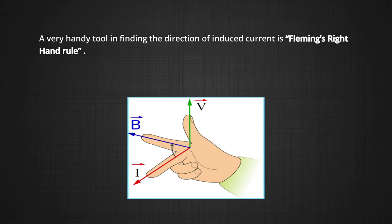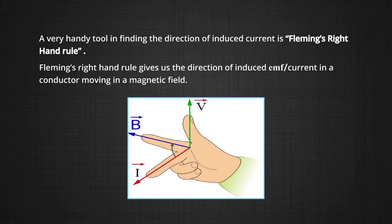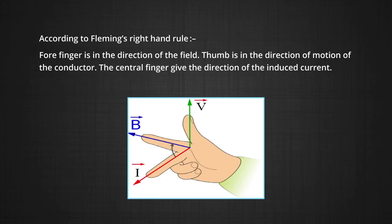This experiment shows how Lenz's law works, but we still need to know in which direction the current will be induced. A very handy tool for finding the direction of induced current is Fleming's right hand rule, which gives us the direction of induced EMF in a conductor moving in a magnetic field. If we stretch the forefinger, central finger and thumb of our right hand mutually perpendicular to each other such that the forefinger points in the direction of the field and the thumb in the direction of motion of the conductor, then the central finger gives the direction of the induced current.